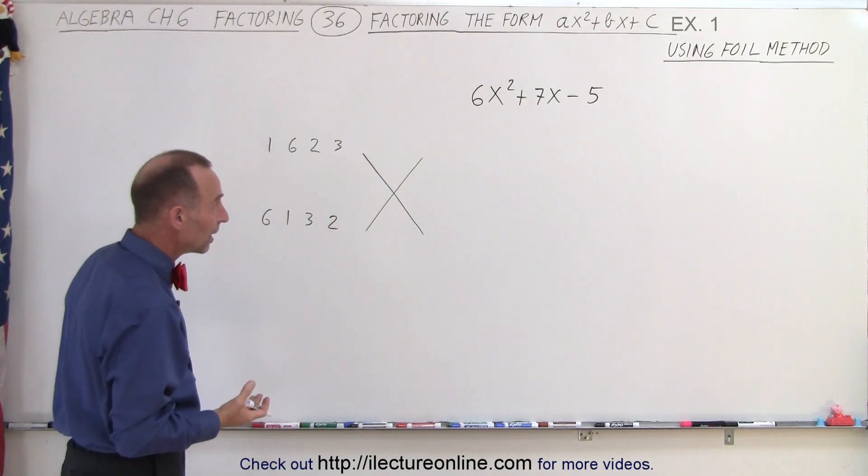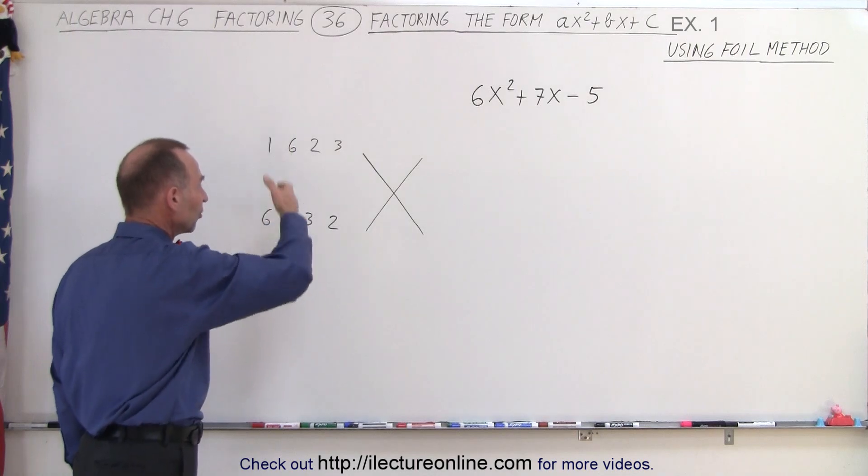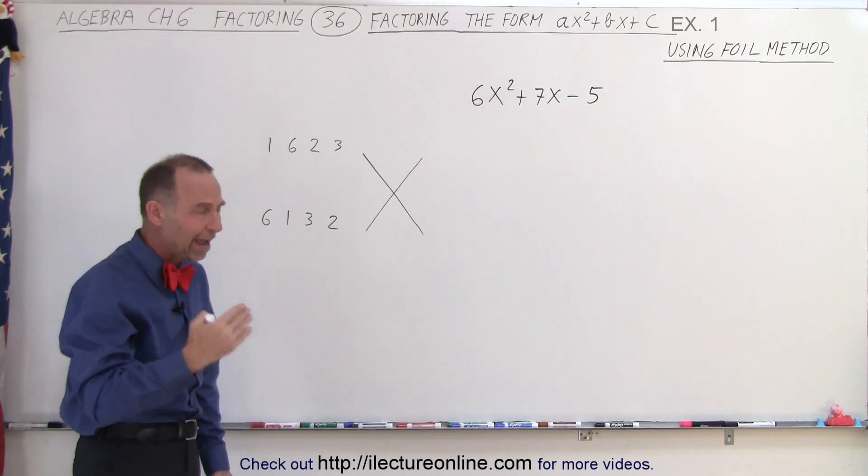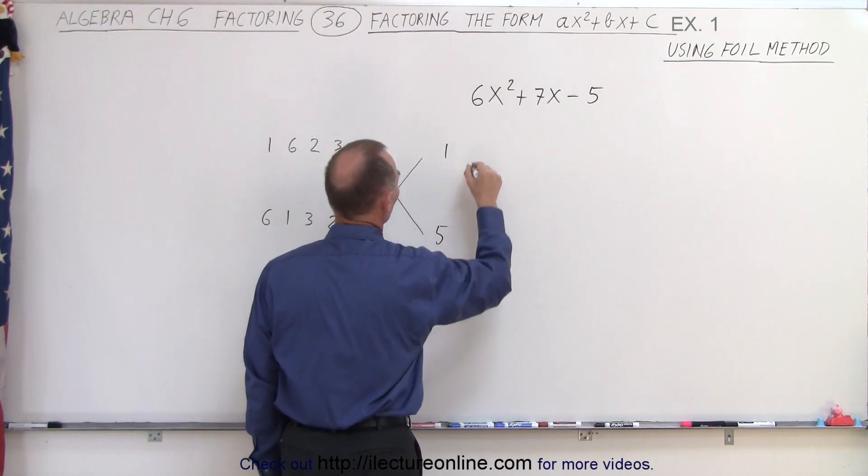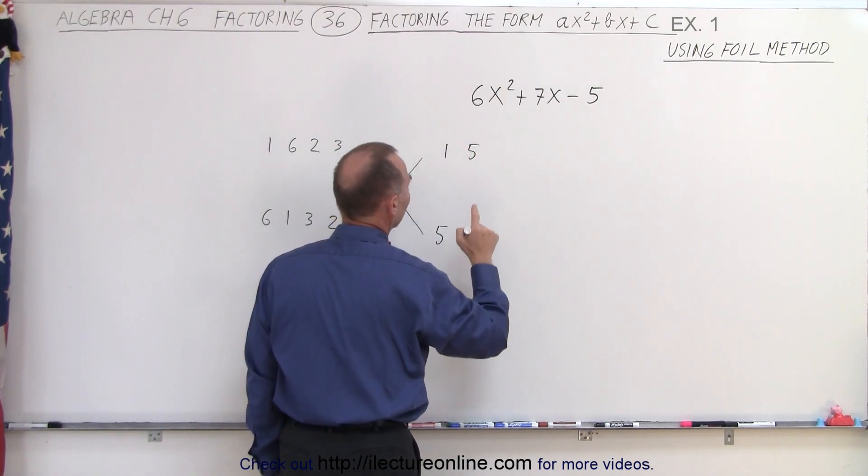Now on the right side, we do the same thing, but since we have all the combinations on the left side, we only need to use half the combinations on the right side. In other words, it could be a 1 and a 5, or a 5 and a 1.